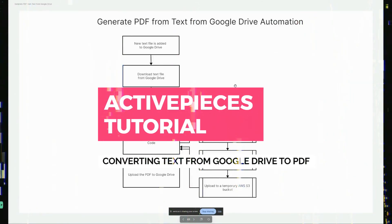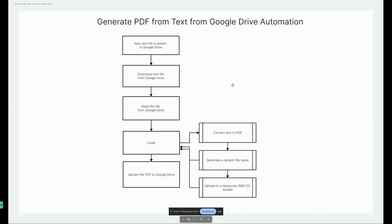Hey everyone, I'm back with another video. Today we're going to be doing another automation using Active Pieces. We're going to look into generating a PDF from a file received from Google Drive and convert that text file into a PDF. The main flow is: when someone adds a text file to Google Drive, we're going to download that text, read that file from Google Drive, and then use some coding with subroutines to perform those actions.